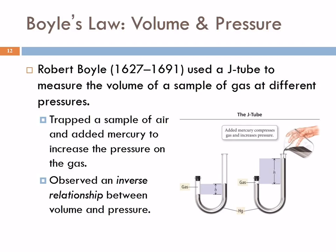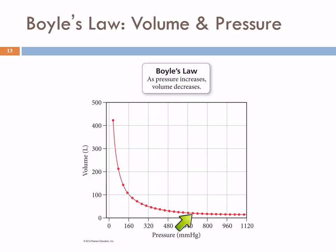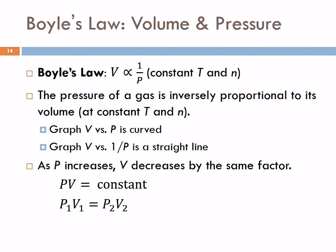The gas gets squeezed together — the volume of the gas went down when the pressure went up. So he observed an inverse relationship: if you increase the pressure, the volume goes down; if you decrease the pressure, the volume goes up. That's inverse. Boyle's Law is that the volume is proportional to 1 over the pressure — that's the inverse relationship.